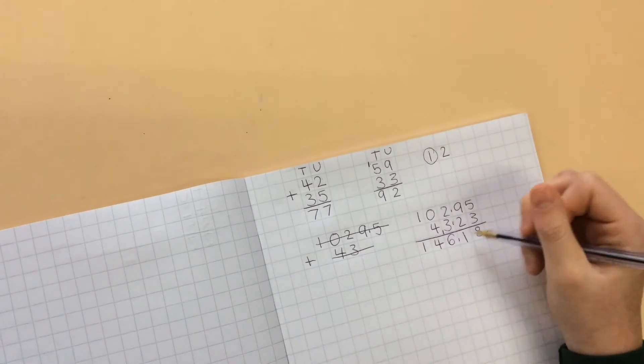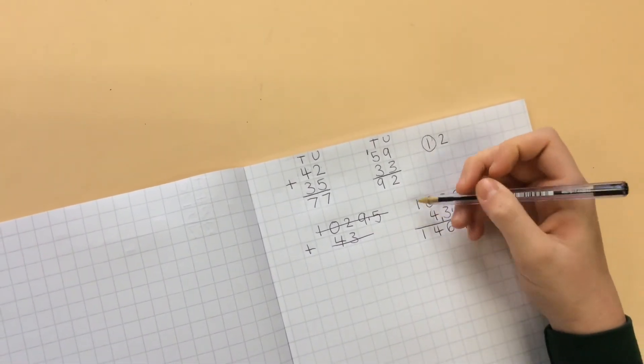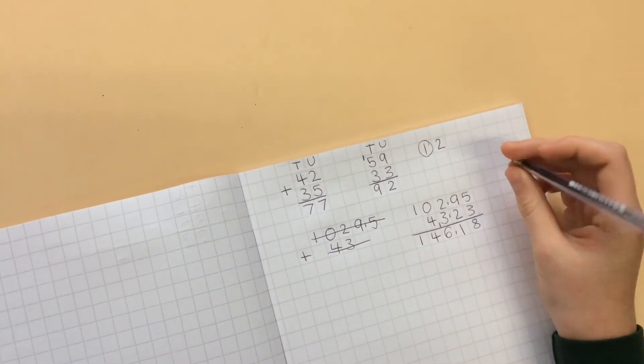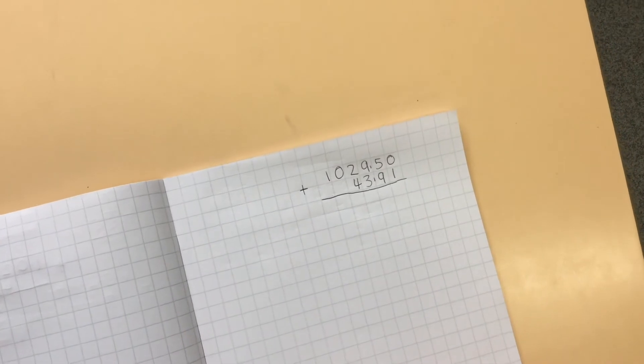You just carry on going down the columns and then you get an answer and it makes it easier. Once you know this method you can apply it to any length calculation.